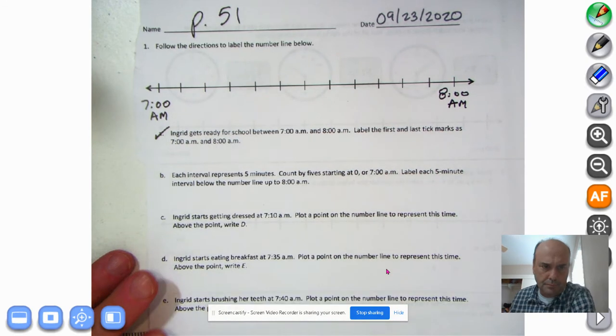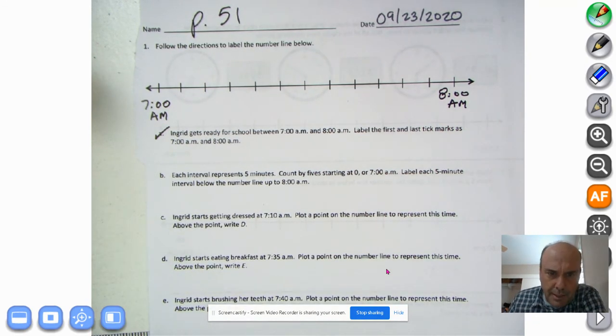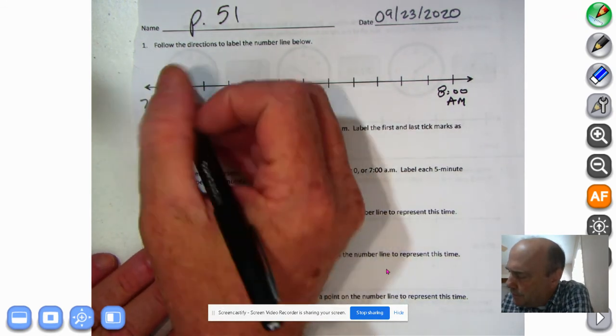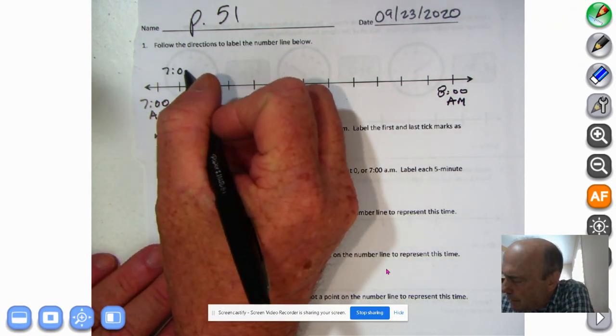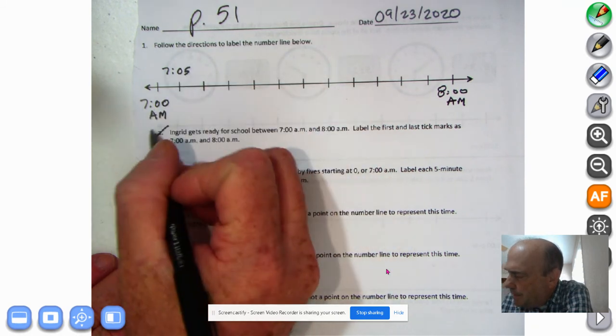Number two, each interval represents five minutes, just like we did in the concept development. We're going to count by fives starting at 0 or 7 o'clock AM. We're going to label each five-minute interval below the number line up to 8 o'clock AM. All right, so we're going to label each interval. So I'm going to start up here with 7 o'clock and we don't need to put the AM. We got that there.